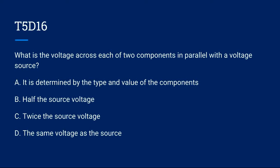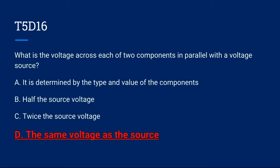T5D16: What is the voltage across each of two components in parallel with a voltage source? A. It is determined by the type and value of the components, B. Half the source voltage, C. Twice the source voltage, or D. The same voltage as the source. Correct answer is D. The same voltage as the source.